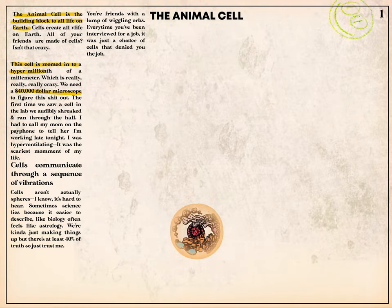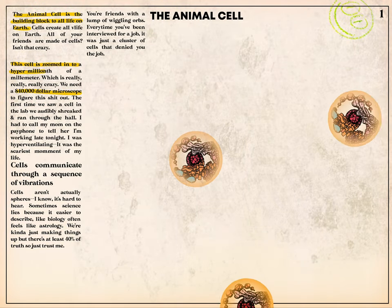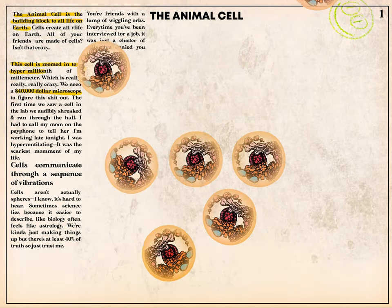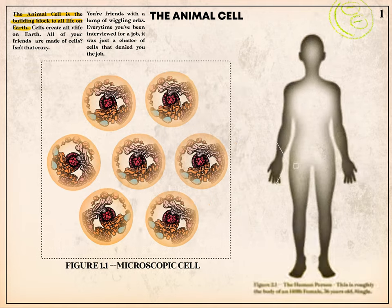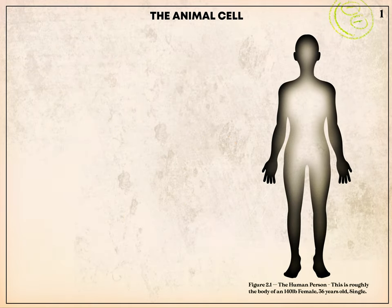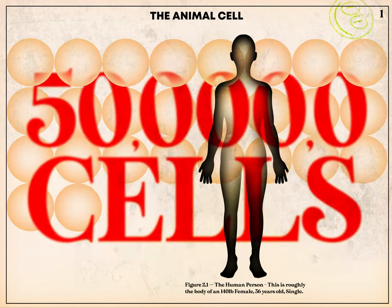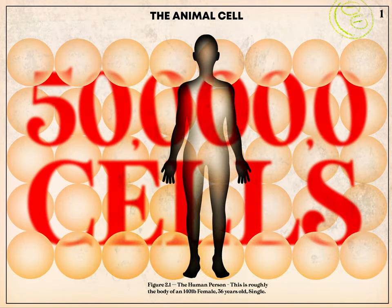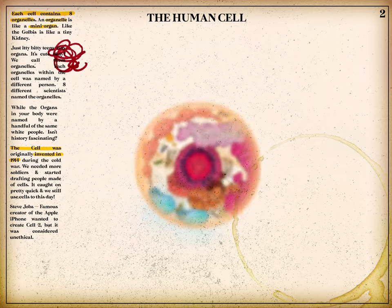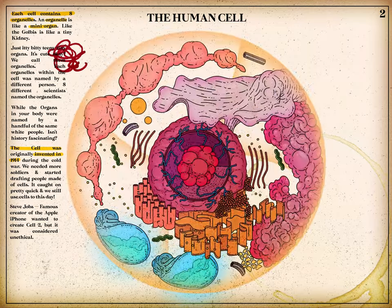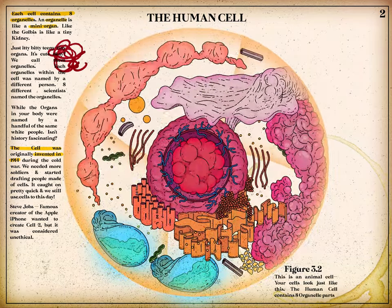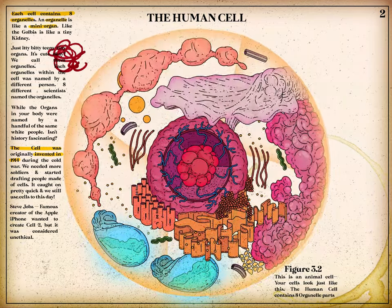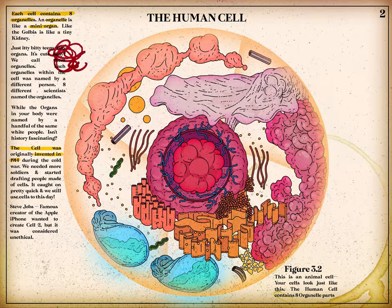Here we have an animal cell. The cell is the building block to all life on earth. Even you contain over 50,000 cells. To power these tiny machines, each cell contains eight special organelle parts.